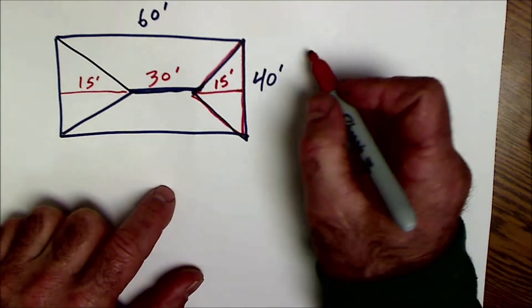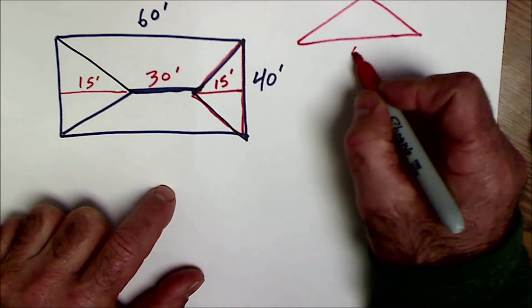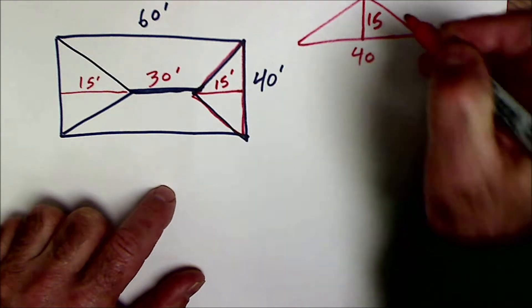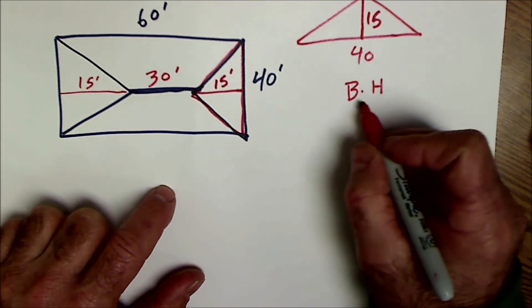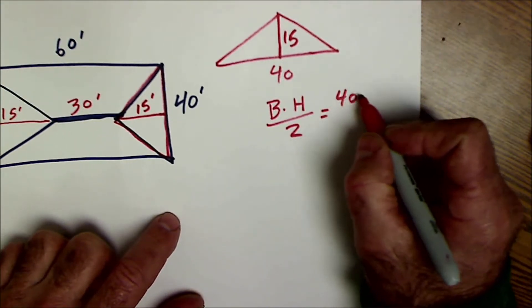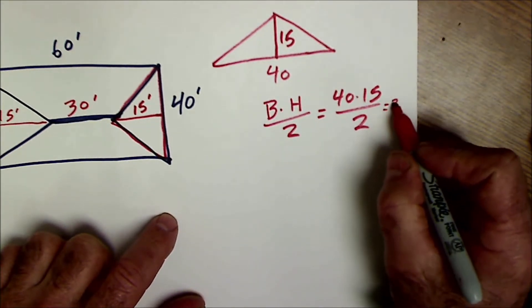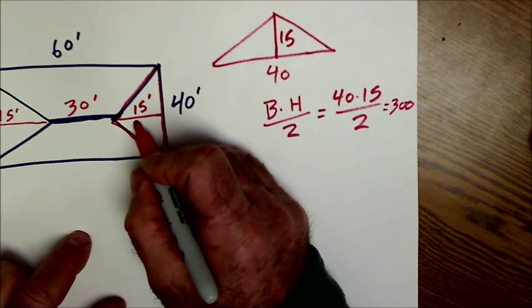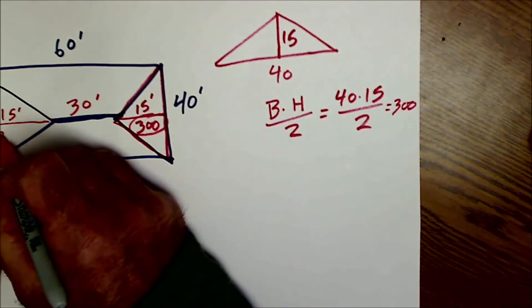So let's find the area of the triangle first. I'm just going to redraw it here. Area of a triangle is base times height, 40 times 15 divided by 2. Again, that's going to be base times height divided by 2, or 40 times 15 divided by 2. And that's going to work out to be 300. So that triangle right there is 300. This one has the same dimensions. It is also 300.